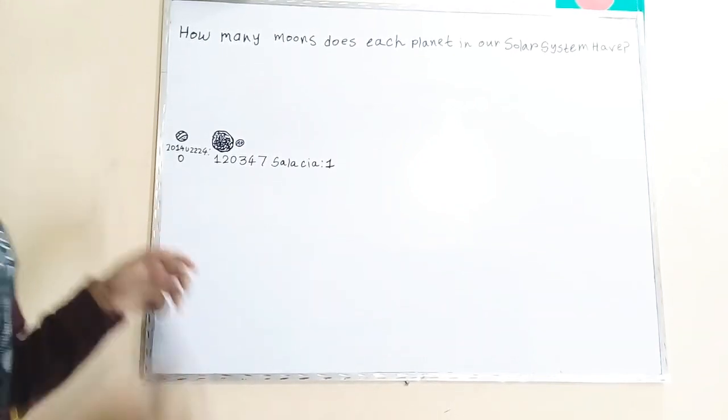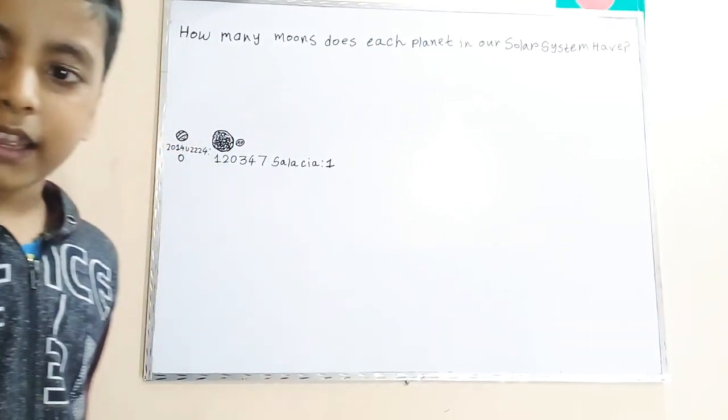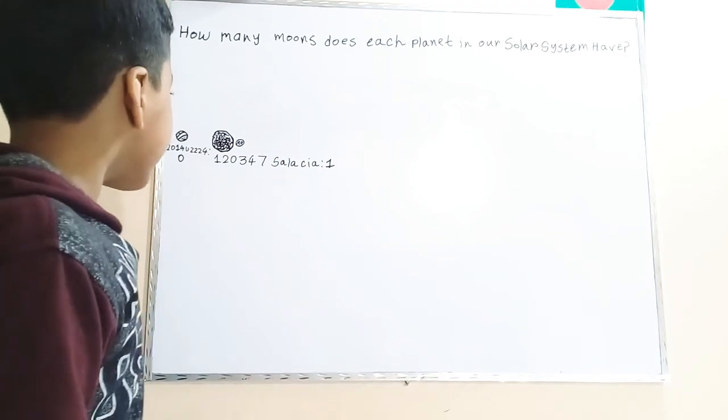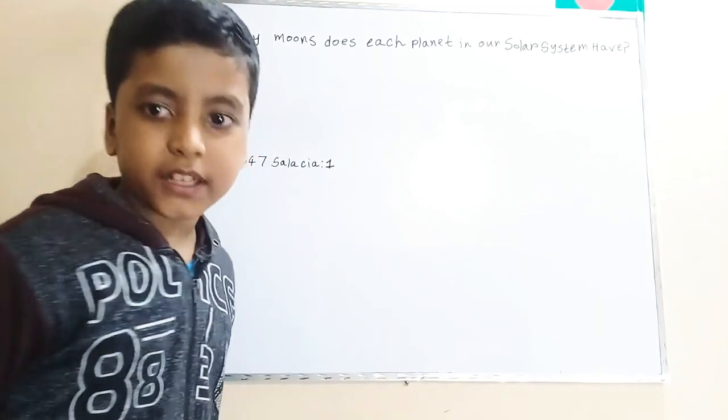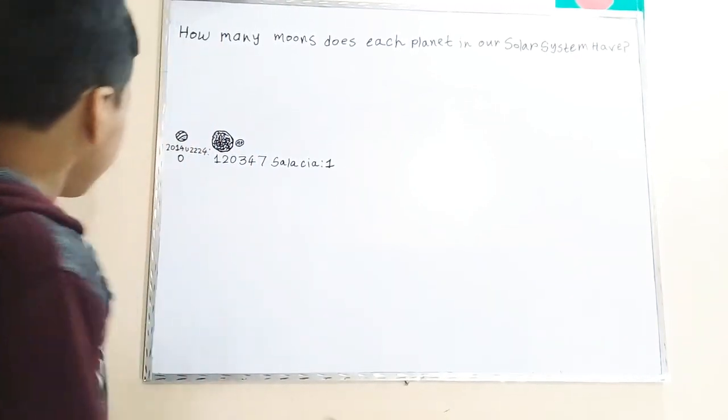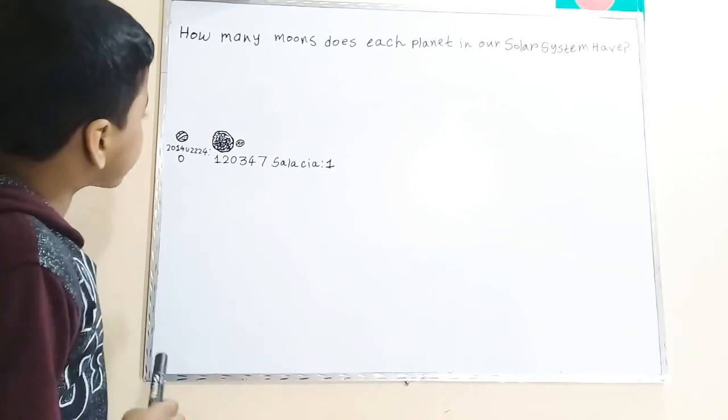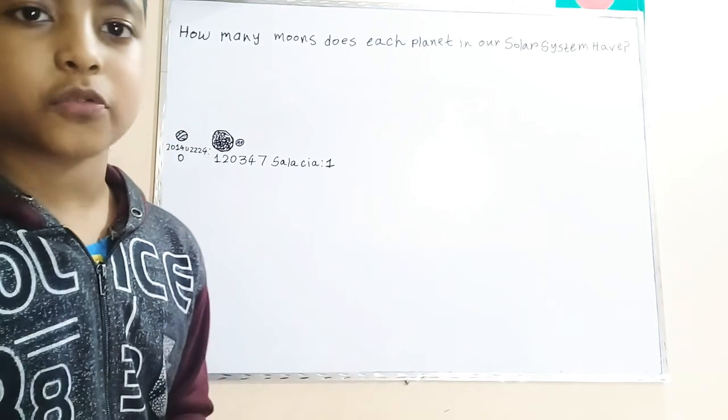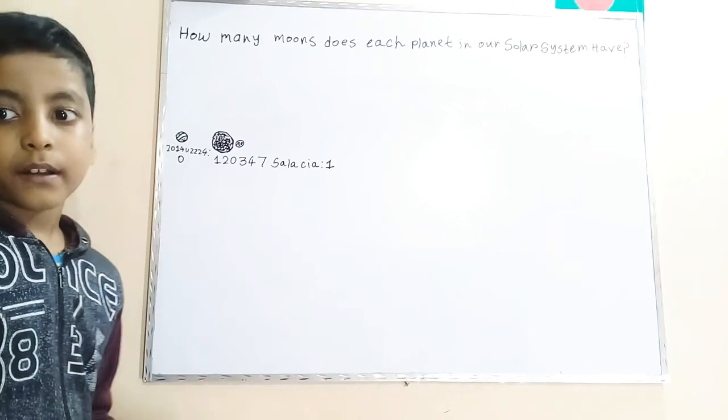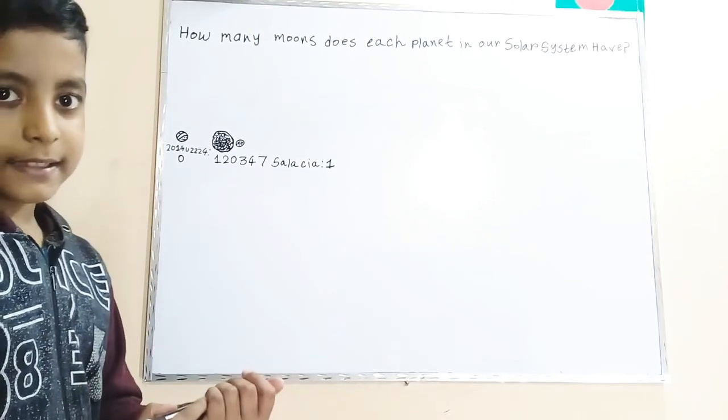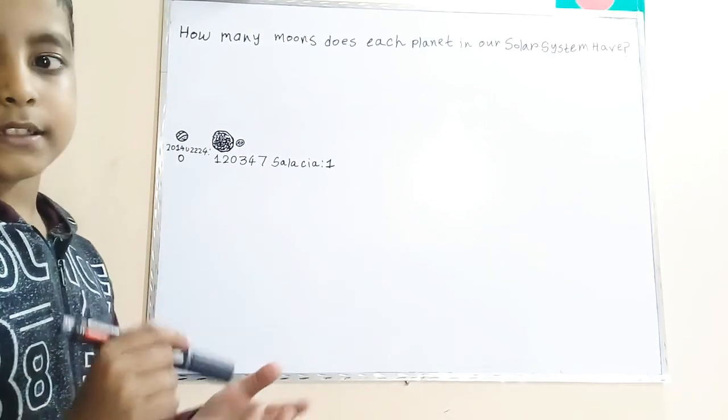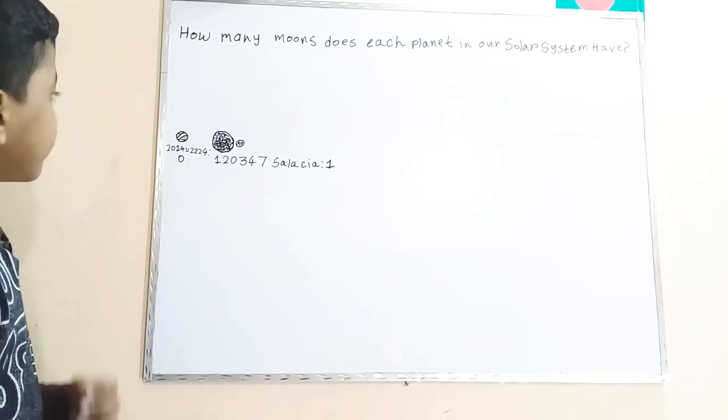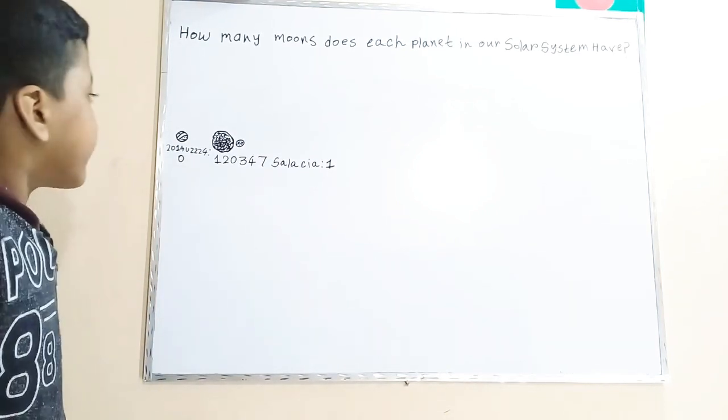2014 UZ224 and 120347 Salacia. Now 2014 UZ224 is so so so small, it is even smaller than Ceres, the smallest dwarf planet.